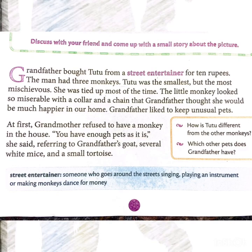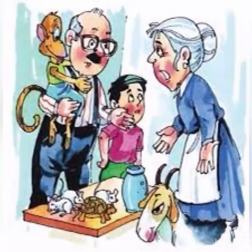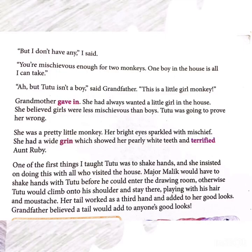Grandfather liked to keep very different and unusual pets at his home. At first, Grandmother refused, saying they couldn't keep a monkey in the house as Grandfather already had enough pets — he had a goat, several white mice, and a very cute small tortoise. But Grandfather said he didn't have a monkey.